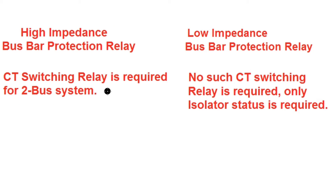In case of high impedance bus bar protection relay for a two-bus system, a CT switching relay is required. The isolator status is connected to the auxiliary relay, and by means of this auxiliary relay the CT is switched so that the particular zone is selected. But in case of low impedance bus bar protection relay, only the isolator status is given to the relay — by means of isolator prop status, that is 89A or 89B (main bus 1 or main bus 2 isolator) — to select the particular zone, zone A or zone B.